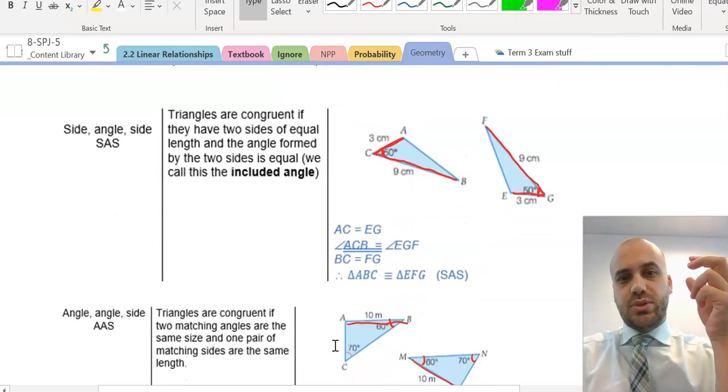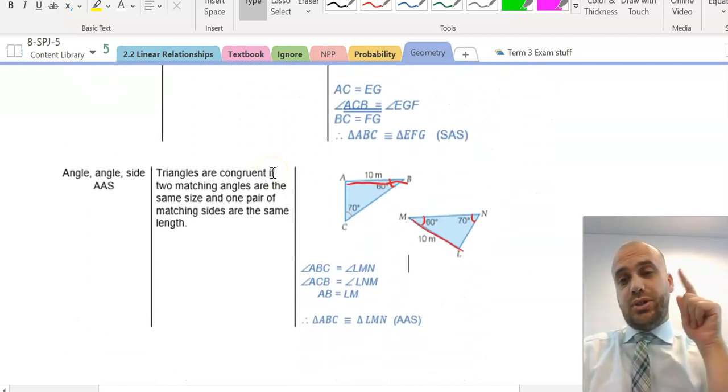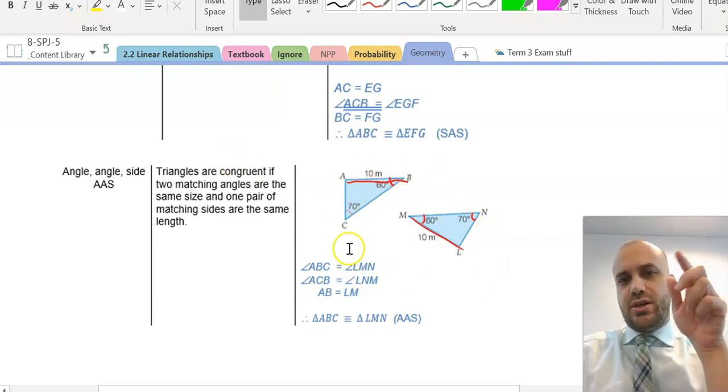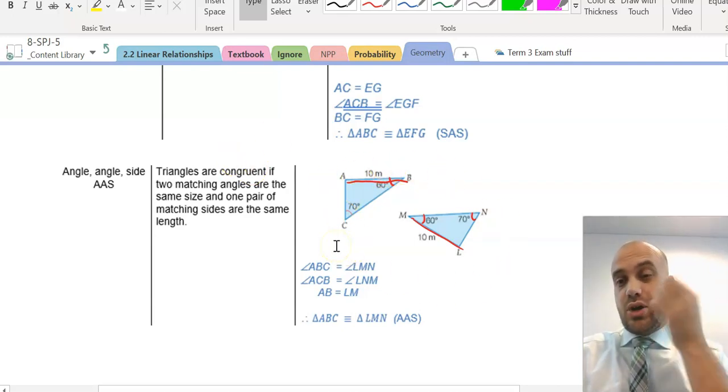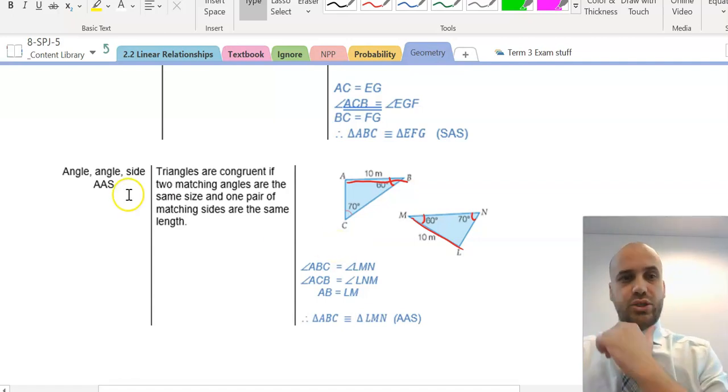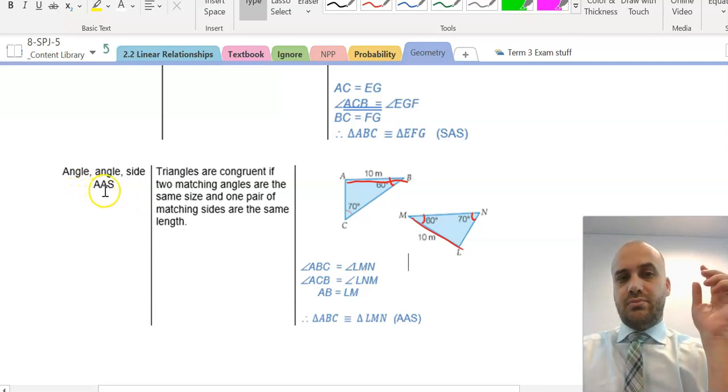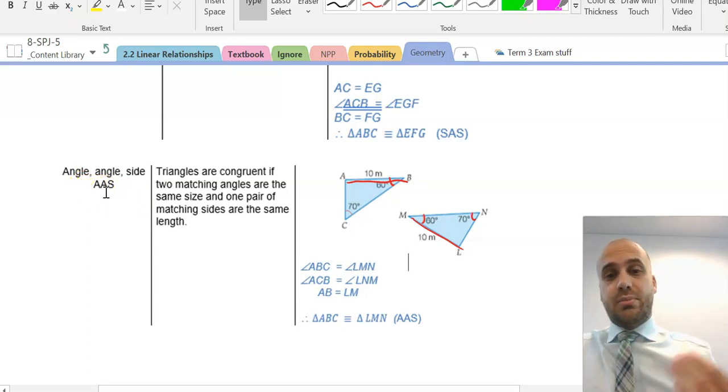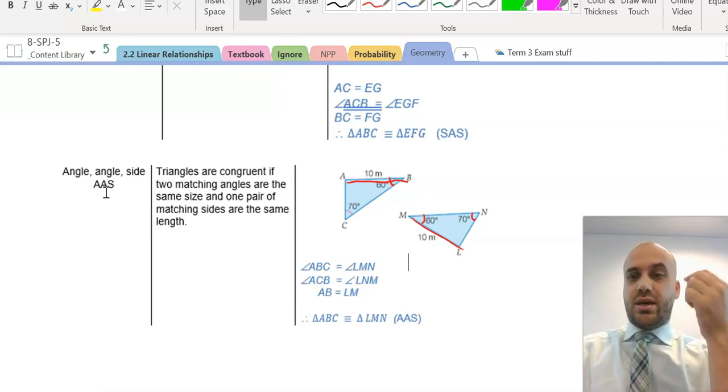Now, I said in the previous example that this was called the SAS rule and the A had to be in the middle. There's no criteria here for where the two angles and the side need to be. So, as long as you know two angles and any of the sides, that's enough information. The order AAS, it could be ASA, it could be SAA, it really doesn't matter, but you always state it as AAS.